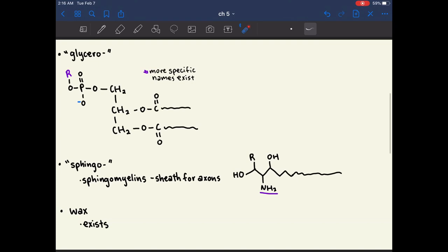So an important sphingolipid is the sphingomyelin, and it forms the kind of fatty acid sheath for axons. I could see that fact coming up in some way.